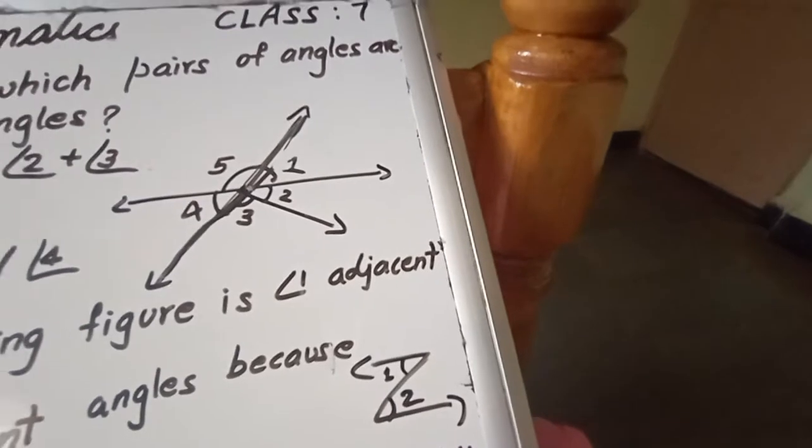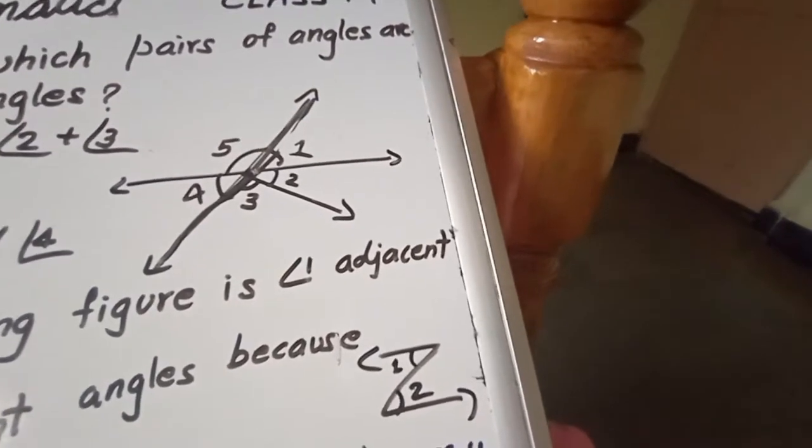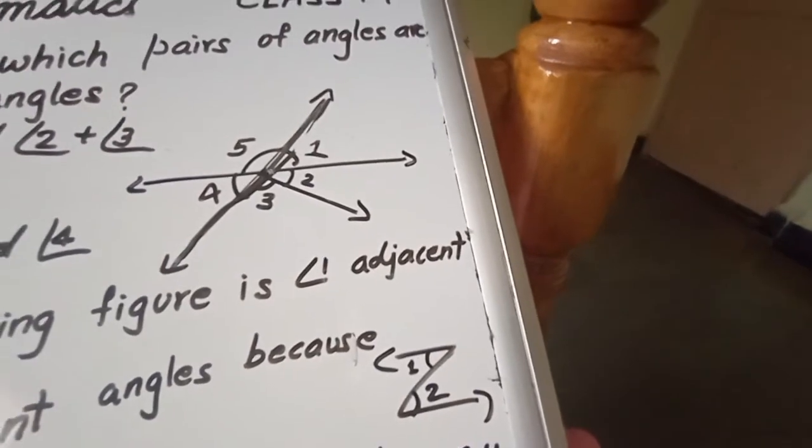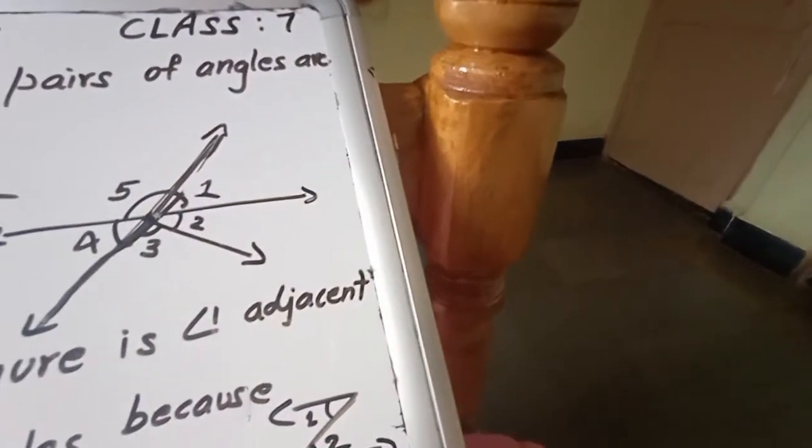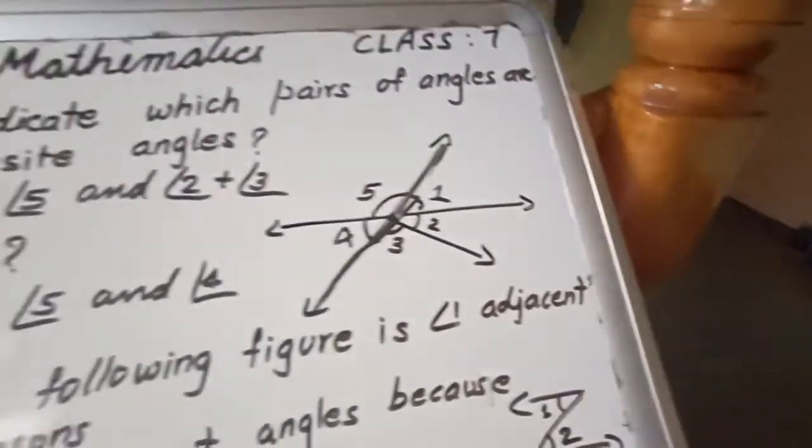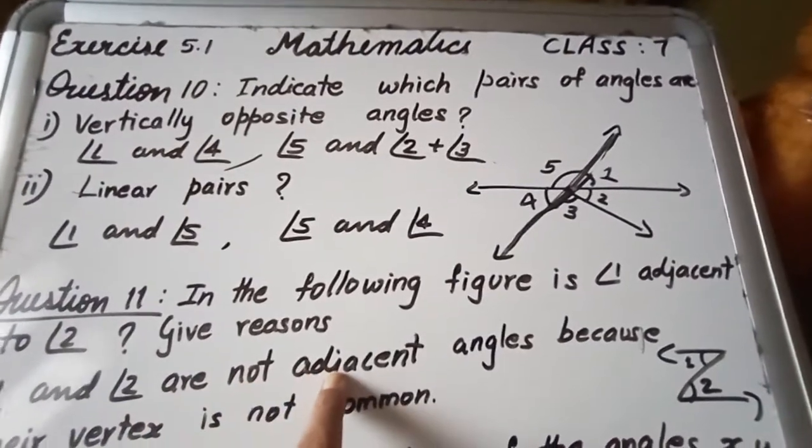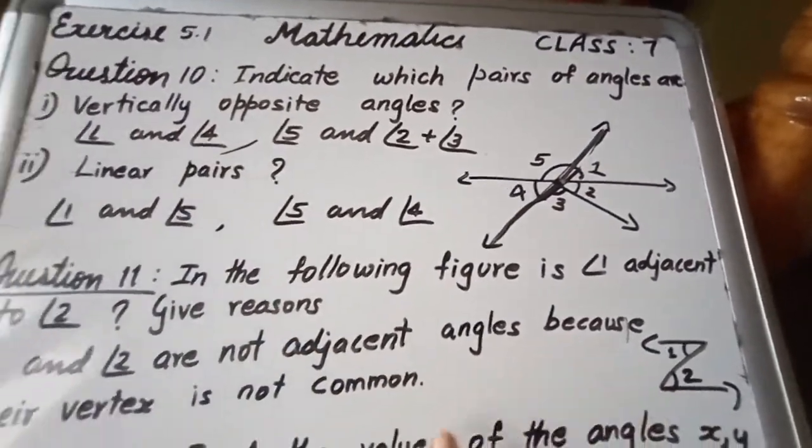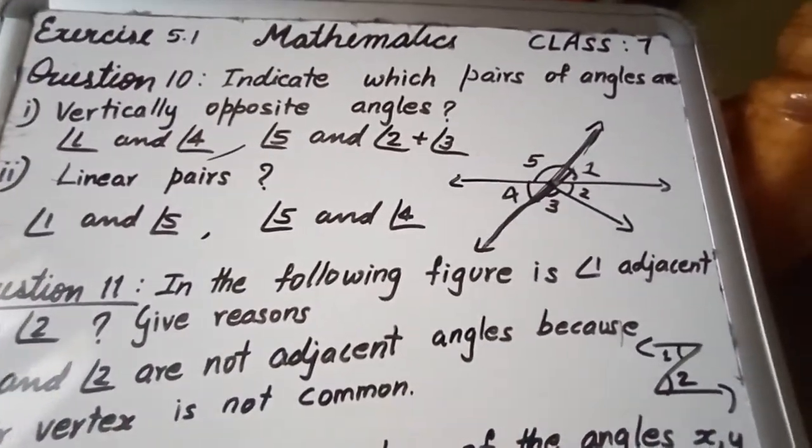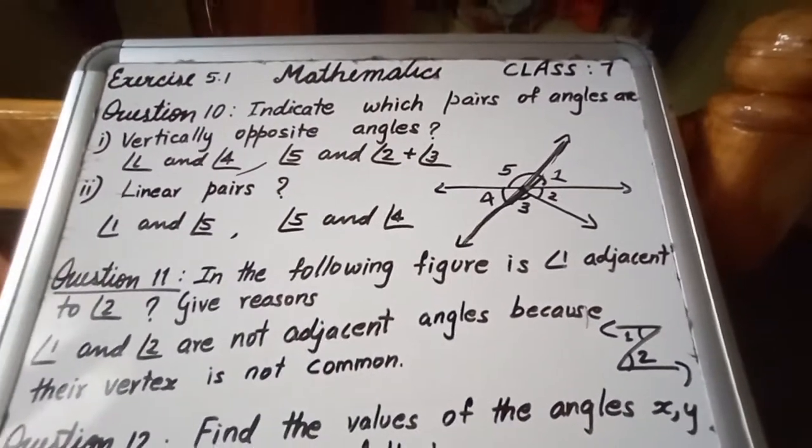Dear student, to become adjacent, two conditions are applied. One is common vertex, one is common arm. You can see here common arm. Is it common vertex? No. So we can write that 1 and 2 are not adjacent angles because their vertex is not common. So you have to give the clear reason for that.